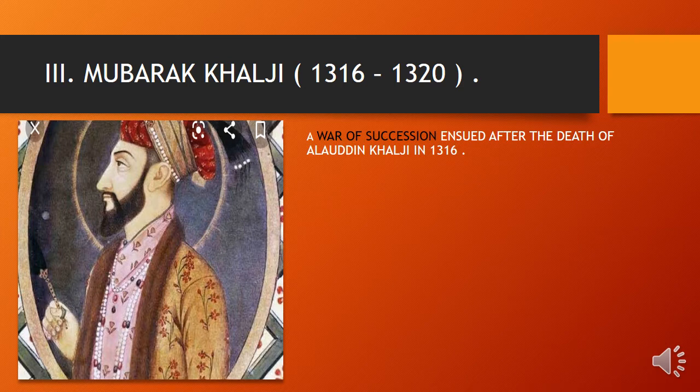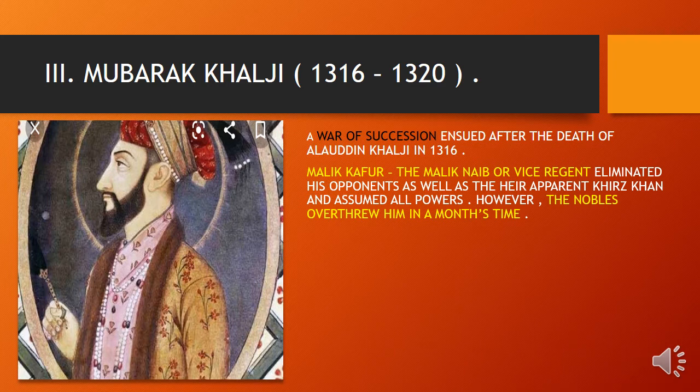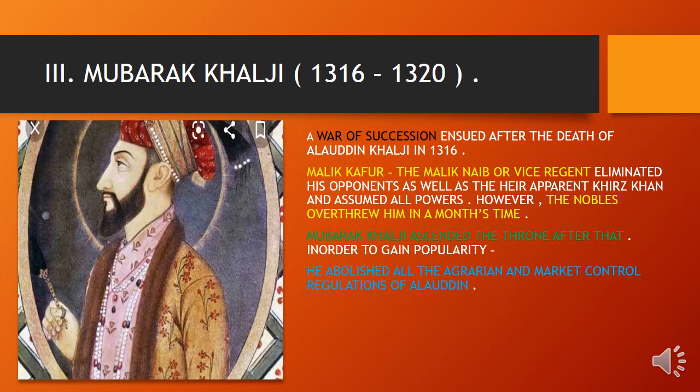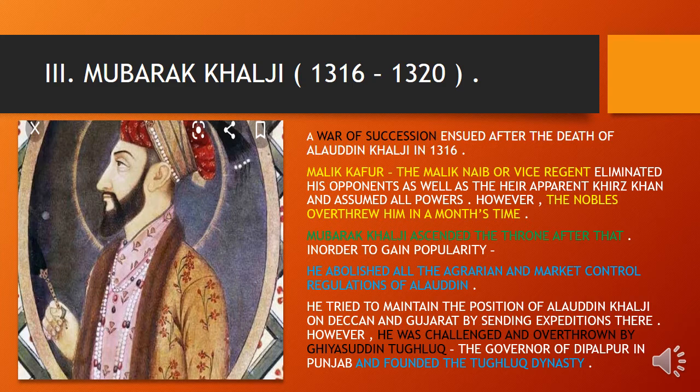After the death of Alauddin Khalji in 1316, a war of succession ensued. Malik Kafur, the Malik Naib or viceregent, eliminated his opponents and the heir apparent Khizr Khan and assumed all powers; however, the nobles overthrew him within a month. Mubarak Khalji then ascended the throne. To gain popularity, he abolished all the agrarian and market control regulations of Alauddin. However, he was challenged and overthrown by Ghiyasuddin Tughlaq, the governor of Dipalpur in Punjab, who founded the Tughlaq dynasty.